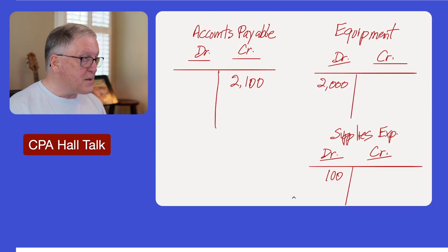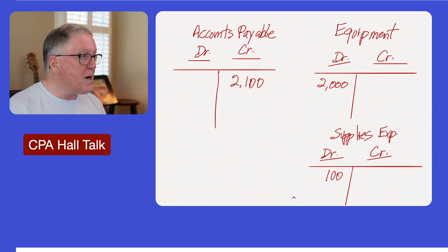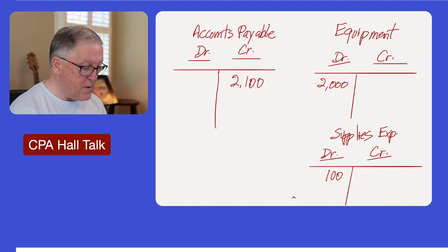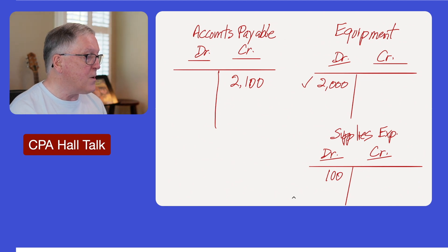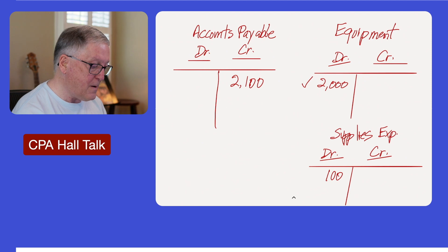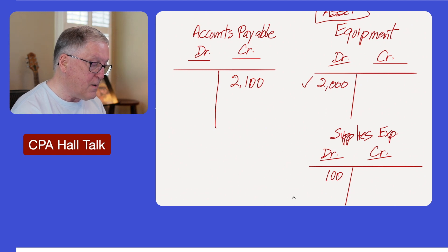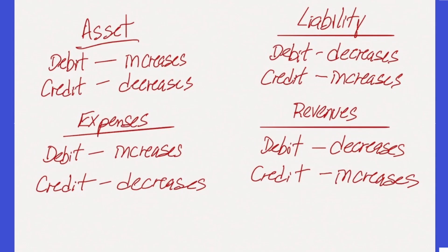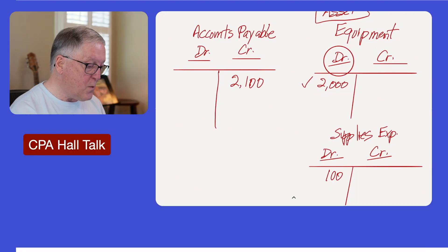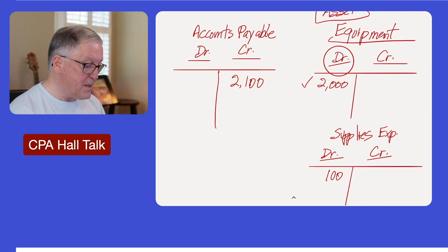In this next example, we go to that same hardware store and buy a lawnmower for $2,000 and some supplies for $100. Equipment is an asset account. To increase an asset, we must debit the account — so for $2,000 we debit the equipment account. We also bought supplies, and for expenses, in order to increase an expense, we must debit the account. So we debit supply expense for $100.